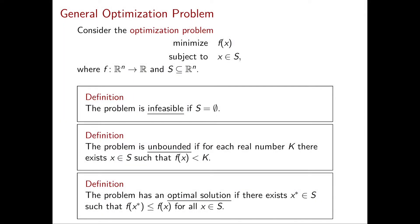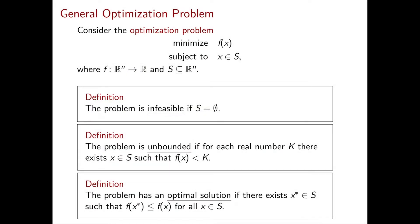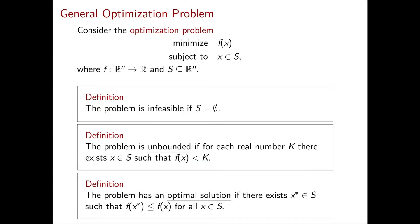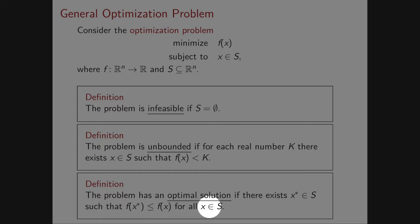Another outcome is that the problem is unbounded, meaning that for every real number k there exists a feasible point such that f(x) is strictly smaller than k. One more possible outcome is that the problem has an optimal solution, which happens whenever there exists a feasible x* such that f(x*) ≤ f(x) for all x in S.